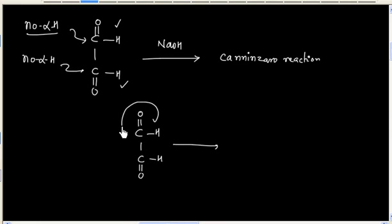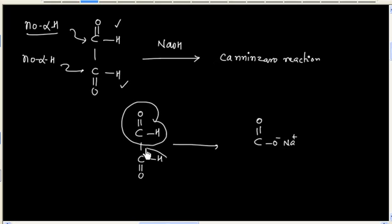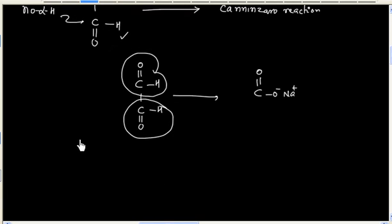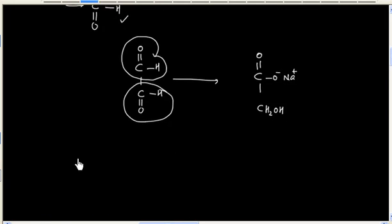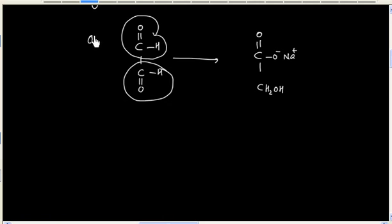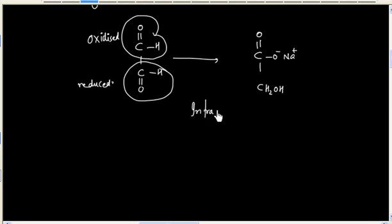So this is called intramolecular Cannizzaro. If we oxidize this half, we will have COO⁻ Na⁺, and we can reduce this half, giving us an alcohol. So this half gets oxidized and this half gets reduced — this is an example of an intramolecular Cannizzaro reaction.